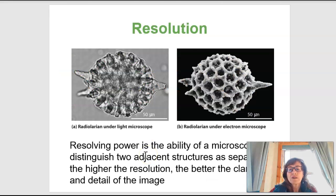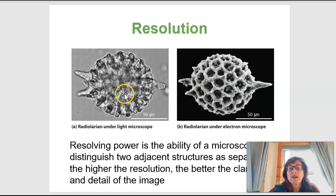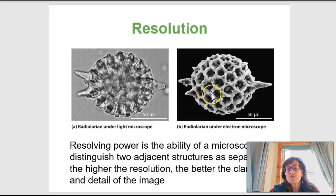Resolving power is the ability to actually distinguish features on an object that are adjacent as being separate. The higher the resolution, the better the clarity and quality of the detail. Here are two images of the same thing — a radiolarian, which we find in water. The resolving power of a light microscope is shown on one side, but using an electron microscope we see all this really intricate detail. It's a much more detailed view.